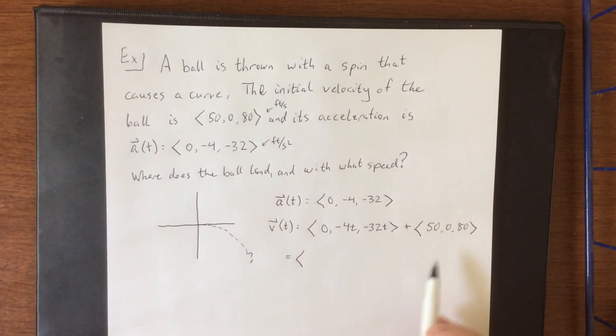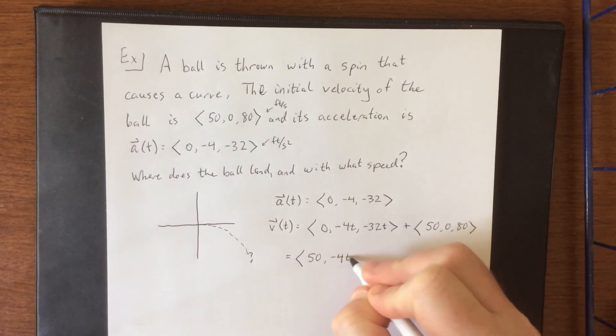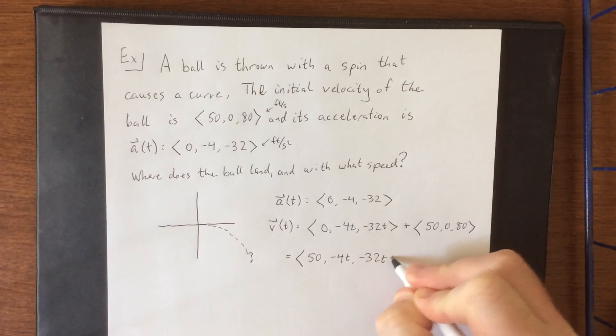So that means that our velocity function can be seen as v(t) = <50, -4t, -32t + 80>.